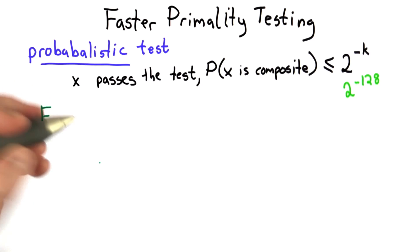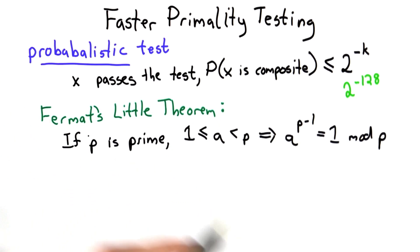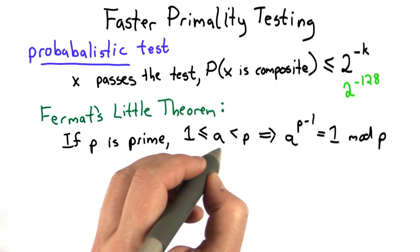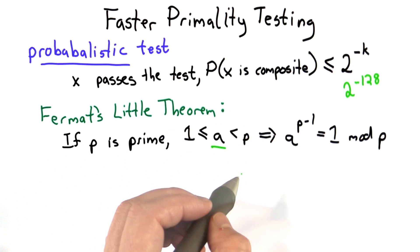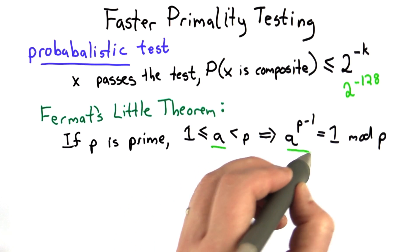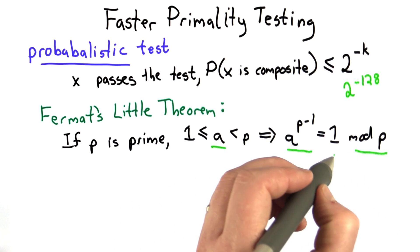So the main basis of probabilistic primality tests is properties of prime numbers. One useful theorem about prime numbers is Fermat's Little Theorem, which states that if p is prime, if we select some number a between 1 and p, and raise a to the p minus 1 power modulo p, the result must always be 1.